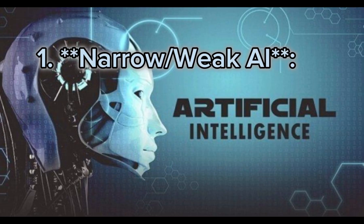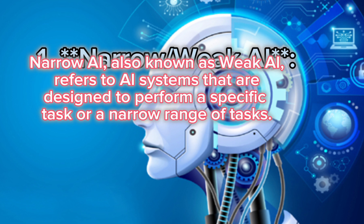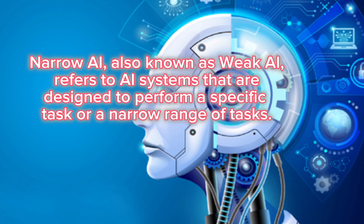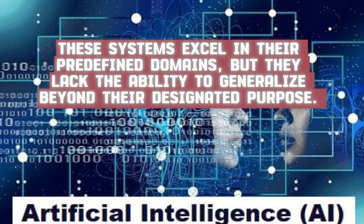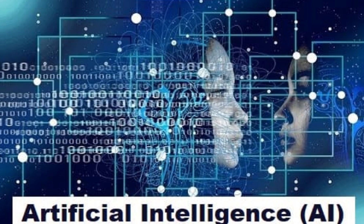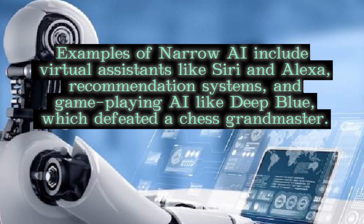1. Narrow AI (Weak AI): Narrow AI, also known as weak AI, refers to AI systems that are designed to perform a specific task or a narrow range of tasks. These systems excel in their predefined domains, but they lack the ability to generalize beyond their designated purpose. Examples of narrow AI include virtual assistants like Siri and Alexa, recommendation systems, and game-playing AI like Deep Blue, which defeated a chess grandmaster.